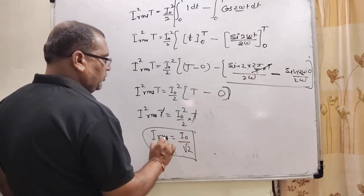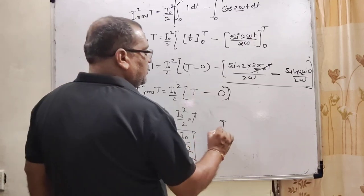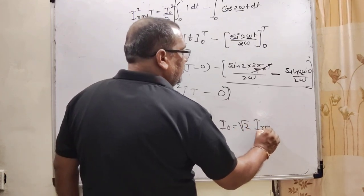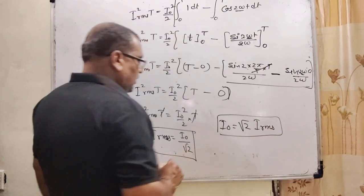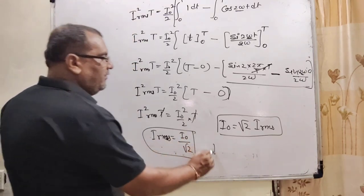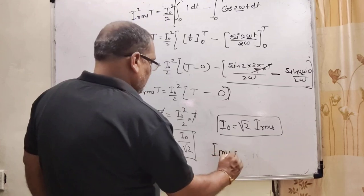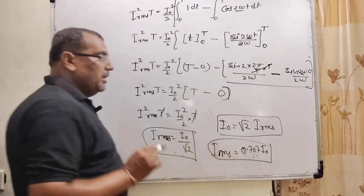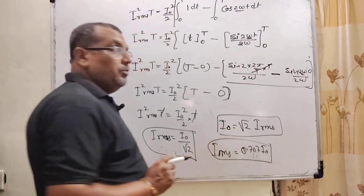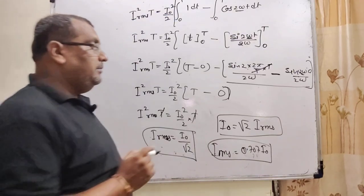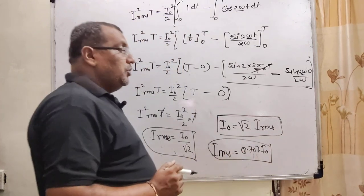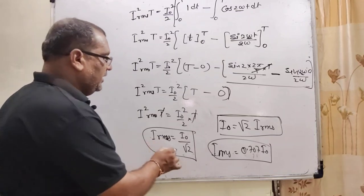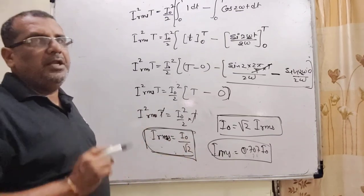यह value होती है RMS value: i_rms = i₀/√2। यहाँ i₀ peak value of alternating current है। i₀ = √2 × i_rms। और i_rms = 0.707 × i₀। इसीलिए कहते हैं कि alternating current is more dangerous than direct current, क्योंकि peak value √2 times ज्यादा होती है। तो यह हो गया i_rms का derivation — यह heating effect को show करता है।